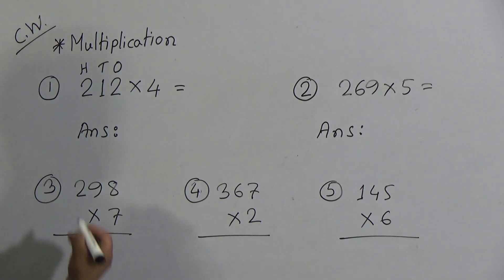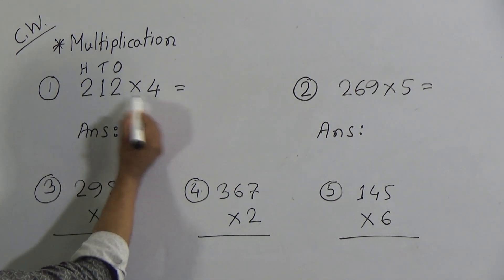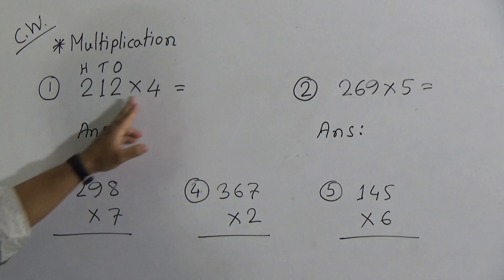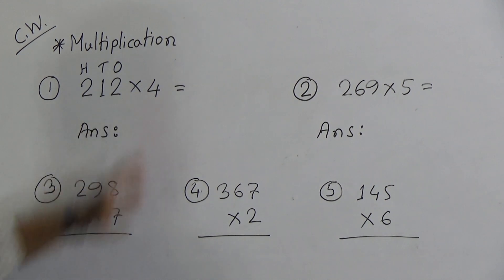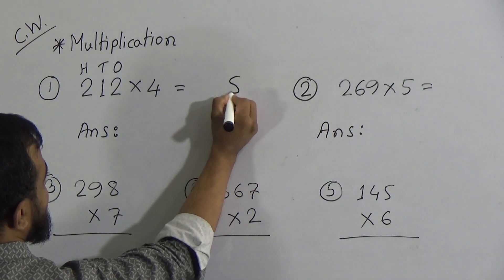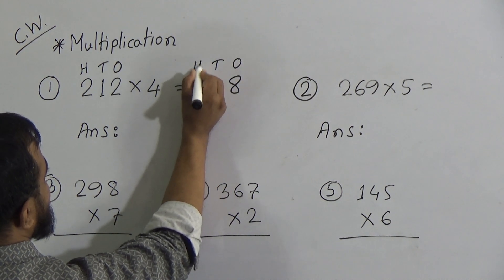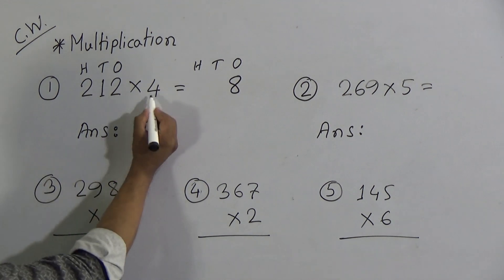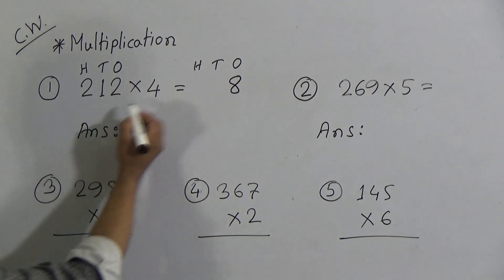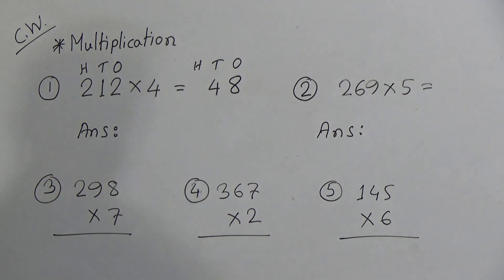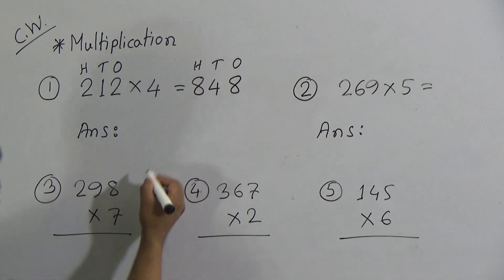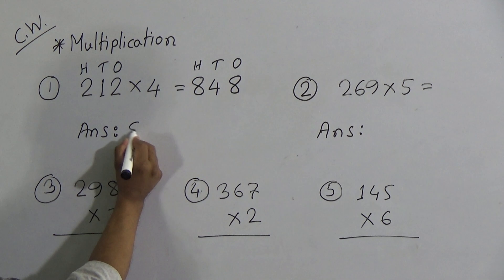First of all, we need to multiply 4 with the 1's place, then 4 with the 10's place, and 4 with the 100's place, consecutively. Using the times table of 4: 4 2's are 8, so we write 8 in the 1's place. Then 4 1's are 4, written in the 10's place. Finally, 4 2's are 8 again, written in the 100's place. Our answer is 848.